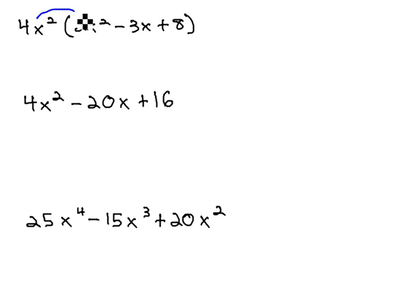In the past, what we would do is multiply the 4x² into the parentheses, giving us 8x⁴ - 12x³ + 32x².